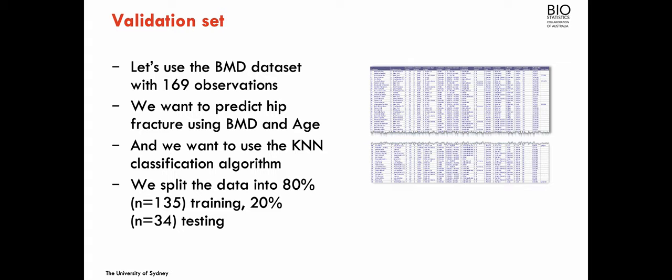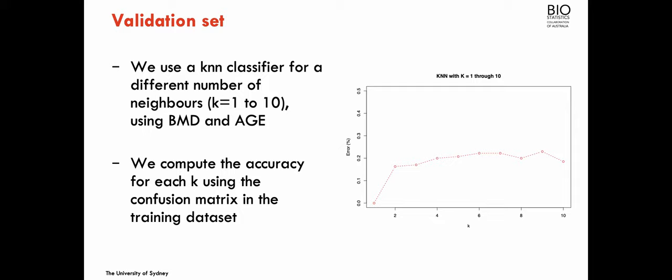I'm going to split the 169 observations into 80% for training and 20% for testing — 135 observations for training and 34 for testing. I'll fit a range of different numbers of neighbors, from 1 up to 10. I want to see how the KNN classifier with different numbers of neighbors performs in terms of predicting fracture using BMD and age, based on the confusion matrix and the percentage of error in the same data used to fit the KNN.